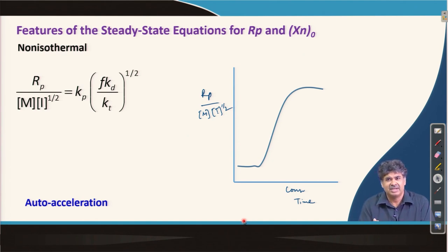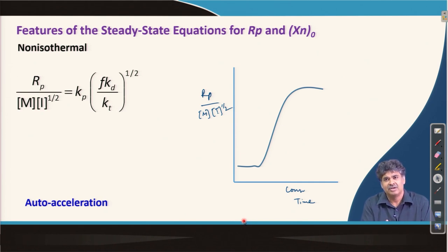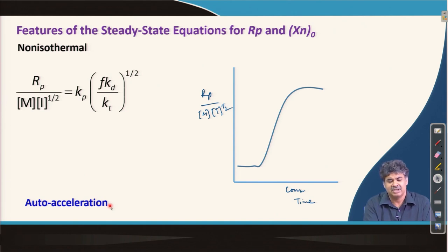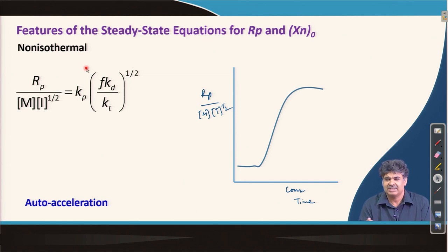Some texts mention that auto-acceleration and gel effect are the same, but these are actually two phenomena that may land up in the same situation, but their origins are different. Gel effect arises because of the high viscosity of the medium, making the termination reaction diffusion-controlled, whereas auto-acceleration happens due to non-isothermal conditions — we cannot remove heat from the system properly, so the temperature of the reaction medium goes up and the reaction rate goes up.